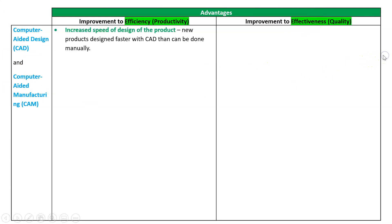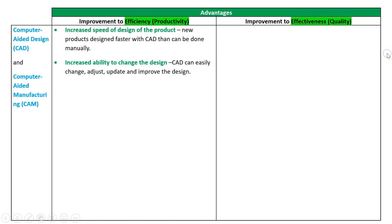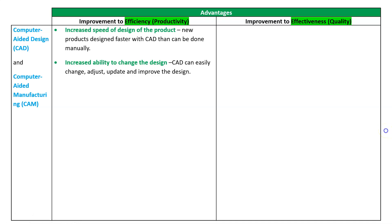We get more efficient with CAD and CAM because we can design products much faster than can be done manually — we're saving on the input of time. We're also saving on time because once we design something and lock it in, we can change it on a screen very easily, whereas that would be very difficult and time consuming to do by hand.